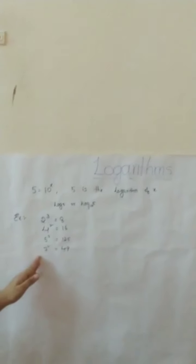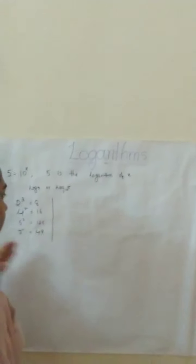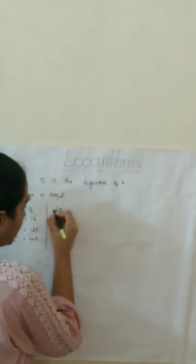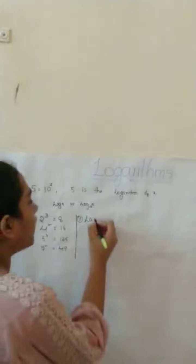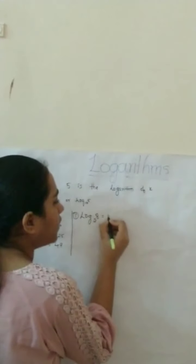Now, let's convert this into logarithms. First one: 2 cube equals 8, so log 8 base 2 equals 3.